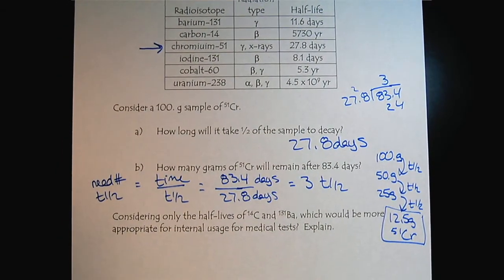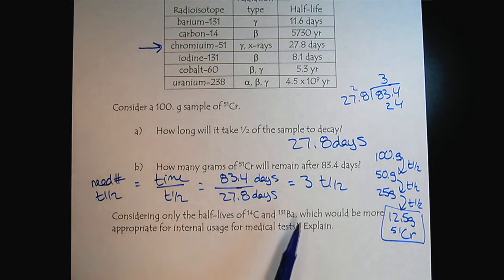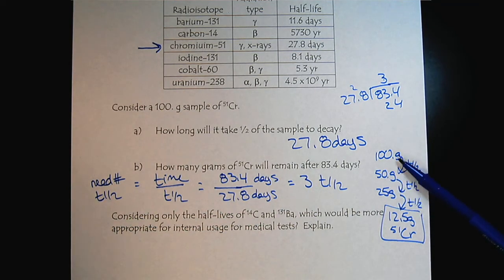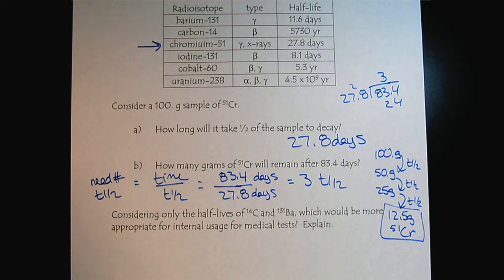So the main thing is to think about the chart on the previous page. So we determined that there are three half-lives. With each half-life, we lose half our sample. So 50, 25, 12 and a half.